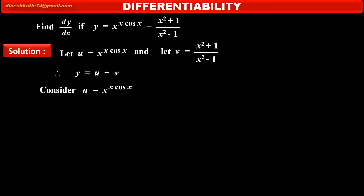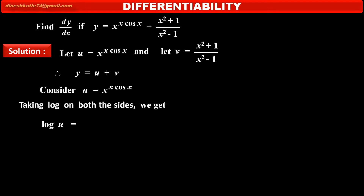First, consider u is equal to x raised to x cos x. To make this function simple, taking log on both sides, we get log u is equal to log of x raised to x cos x. By using the law of exponents of logarithm, we get log u equals x cos x into log x.